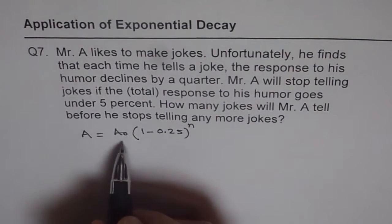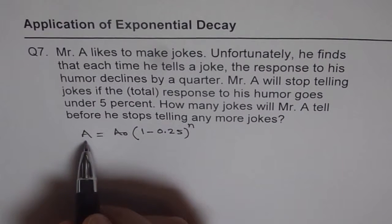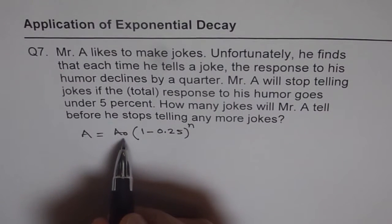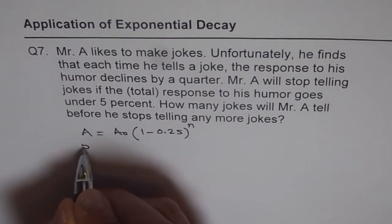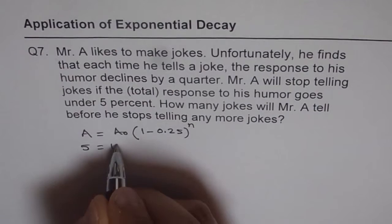it goes to 5. So we can take A as 5% also. So I prefer to write 5 for A starting with a value of 100.